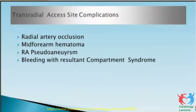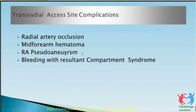Trans-radial access complications: radial artery occlusion may occur — less than 1 to 1.5 percent of patients. Mid-forearm hematoma can occur when pushing the wire blindly through tortuosity or loops — this may be caused by the wire, the sheath, or the catheter. Radial artery pseudoaneurysm is very rare, more common with repeated puncturing and size mismatch between sheath and artery. Bleeding with resultant compartment syndrome — I have not come across any compartment syndrome in my 20 years of practice.